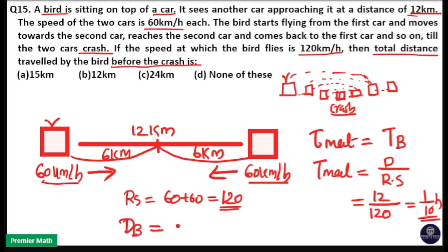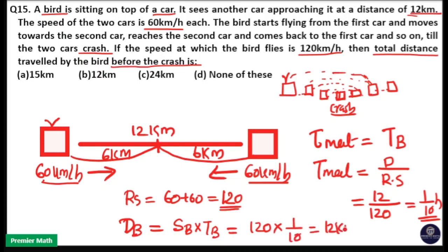Total distance travelled by the bird equals speed of bird multiplied by time of travel. Speed of bird is 120 km/h and time is 1/10 hour, so distance = 120 × 1/10 = 12 km. Option B is your answer.